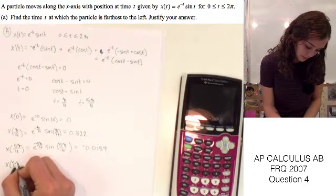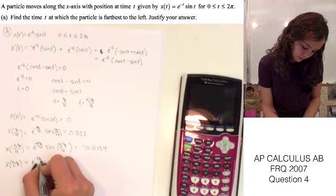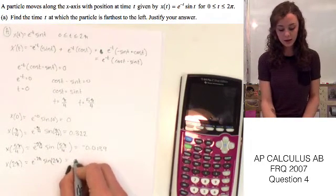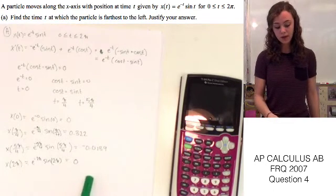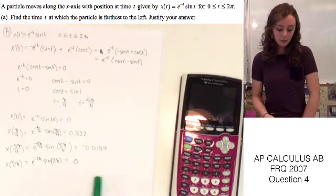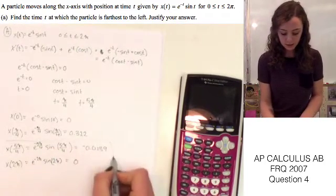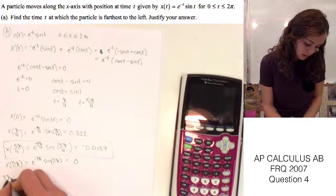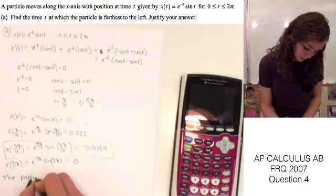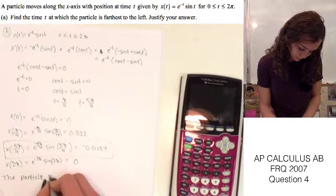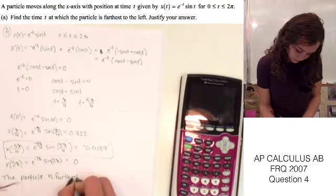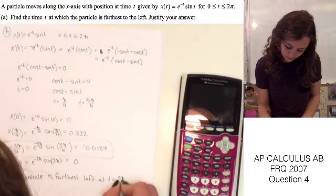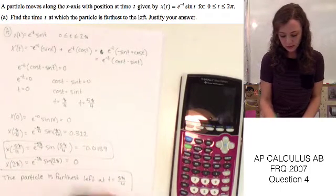When you plug in 2 pi, that ends up being 0. Now we find the lowest value from our critical numbers and endpoints, and that's going to be at 5 pi over 4, because as we can see, that's a negative value, indicating the particle will be furthest to the left. So our final answer is the particle is furthest to the left at t equals 5 pi over 4, and that's how you solve part A of this problem.